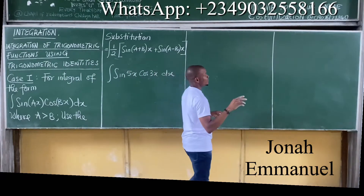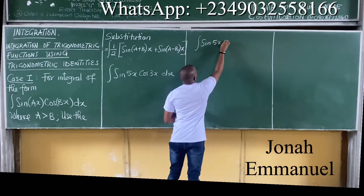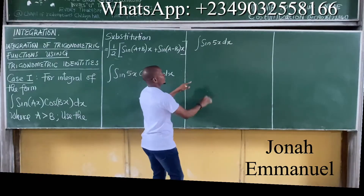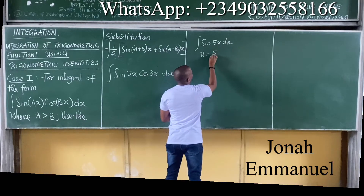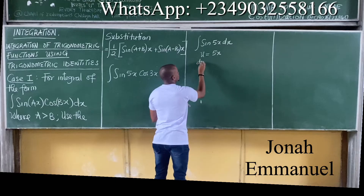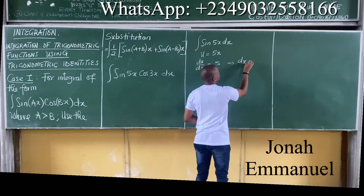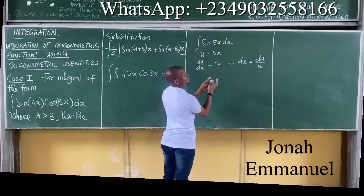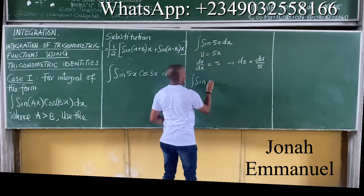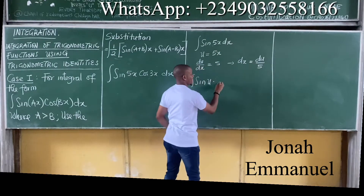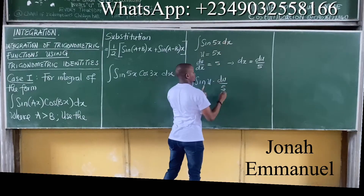Let's look at two things. Case one: say I'm asked to perform the integral of sin(5x)dx. I'll use the substitution method. Let u equal 5x, such that if I differentiate, du/dx equals 5. From here, solve for dx: dx equals du over 5. On substituting, the integral becomes the integral of sin(u) — replacing 5x with u — and dx is replaced by du over 5.